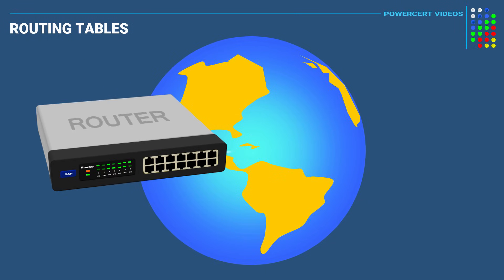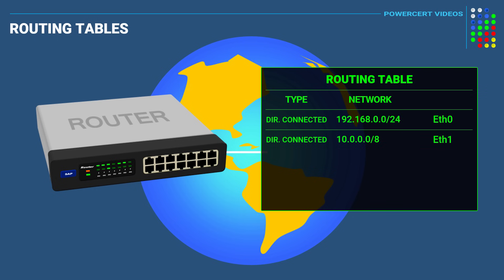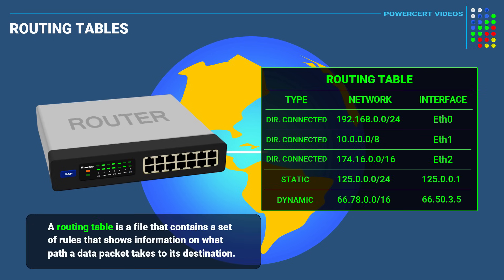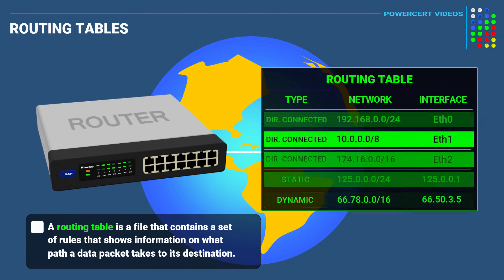Routers route data by using routing tables. A routing table is a file that contains a set of rules that shows information on what path a data packet takes to its destination. So as a data packet arrives at the router, the router will look at its routing table to find out where to forward the data packet along the best path to its destination.